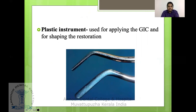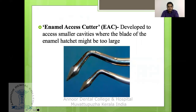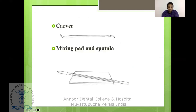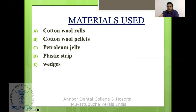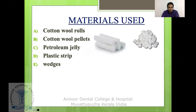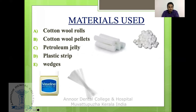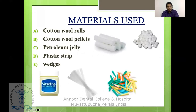The plastic filling instrument is used for applying the GIC and for shaping the restoration. The enamel access cutter is another instrument developed for ART to access small cavities. A carver, mixing slab and spatula are used for mixing the GIC. Materials needed include: cotton rolls and cotton wool pellets for isolation, petroleum jelly applied after placement of GIC, plastic strips, and wedges.